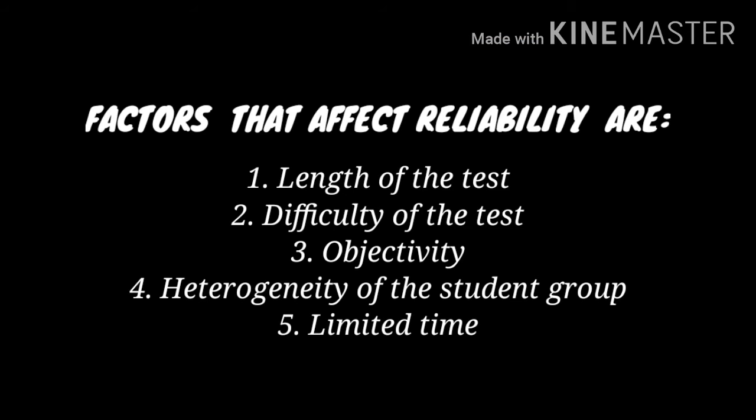Some factors that affect reliability are: first, length of the test — as a general rule, the longer the test, the higher the reliability. A longer test provides a more adequate sample of the behavior being measured and is less distorted by chance factors like guessing. Second, difficulty of the test: when a test is too easy or too difficult, it cannot show the differences among individuals, and thus it is unreliable. Ideally, achievement tests should be constructed such that the average score is 50% correct and the scores range from near zero to near perfect.